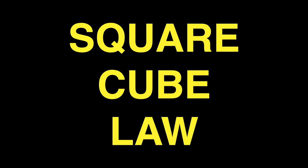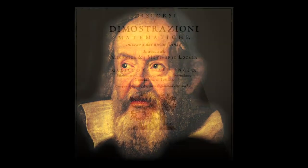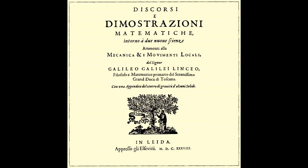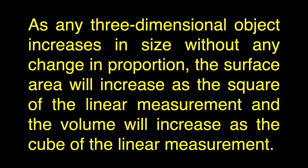This sounds something like a geometry problem, and it is partially. In 1638, Galileo published Discourses and Mathematical Demonstrations Relating to Two New Sciences. In this book he describes the square-cube law as: the ratio of two volumes is greater than the ratio of their surfaces. As any three-dimensional object increases in size without any change in proportion, the surface area will increase as the square of the linear measurement and the volume will increase as the cube of the linear measurement.